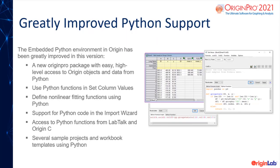The embedded Python environment in Origin has been greatly improved in this version. This includes a new Origin Pro package with easy high-level access to Origin objects and data from Python. Users can now use Python functions in set column values and define nonlinear fitting functions using Python. In addition, there is support for Python code in the import wizard and access to Python functions from LabTalk in OriginC. Users can access several sample projects and workbook templates using Python.